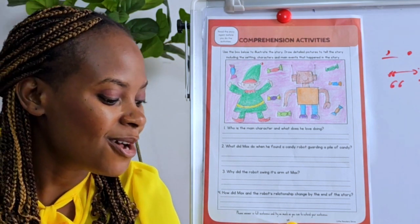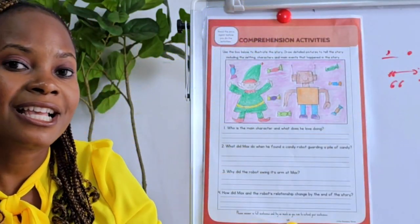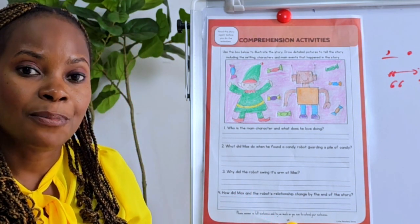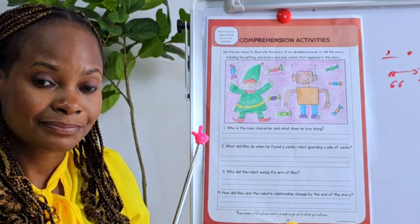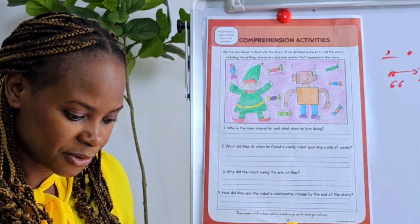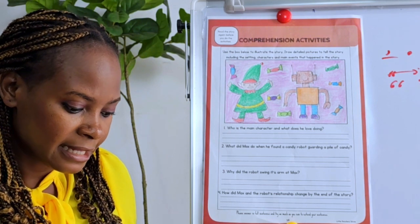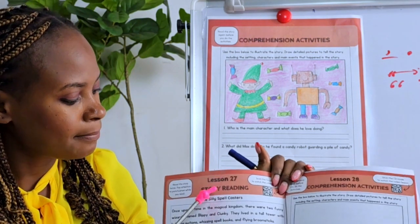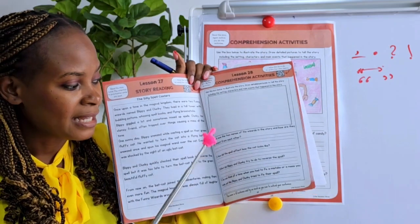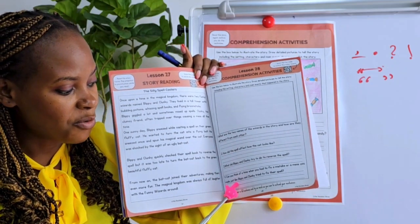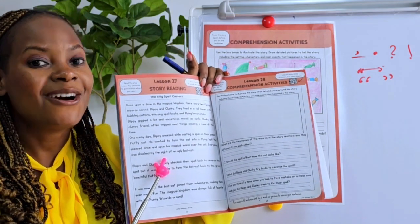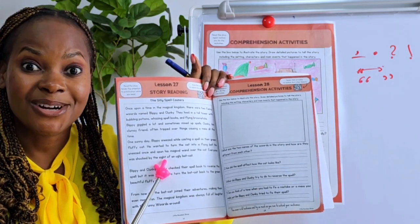So all your answers are coming from the story — you just have to read through and find them. Now please pause the video and read your story. Which story are you reading today? You're reading 'The Silly Spell Casters.' After that you're going to draw a beautiful picture about the story, then answer questions. All your answers come from the story. Pause the video and have a go. Once you're done, keep your book in your shelf place. I'll see you tomorrow, bye!